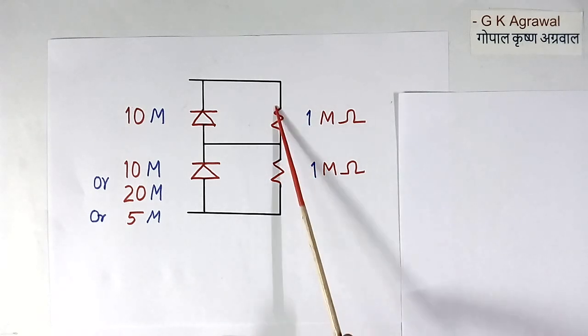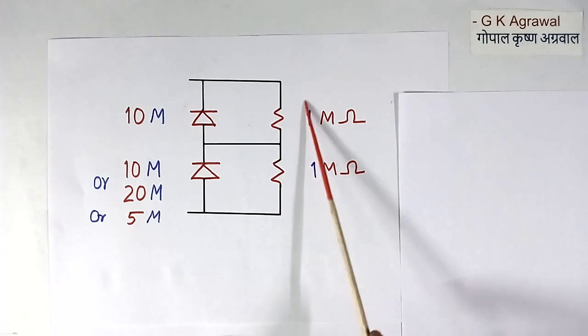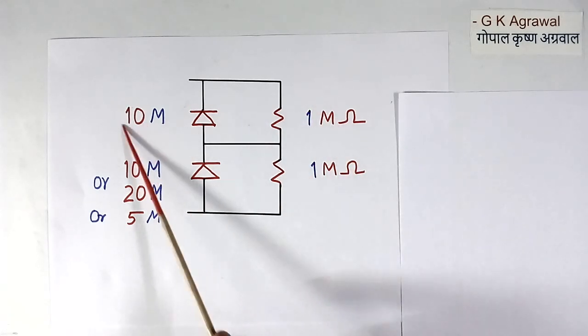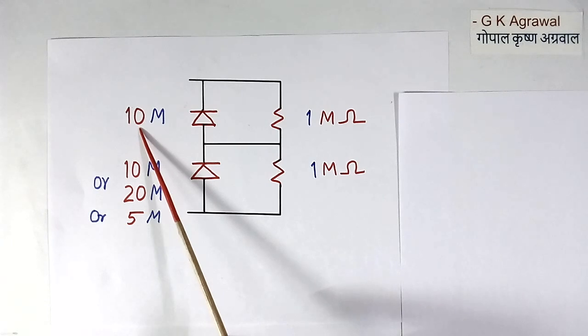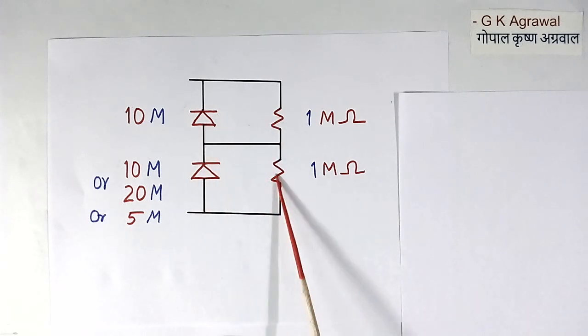We connect a resistor in parallel of these diodes. This resistor value should be less than 10% of this value. So they will become in parallel. Now if we calculate the total resistance here and here, they will not be equal, but they will not have much difference also.